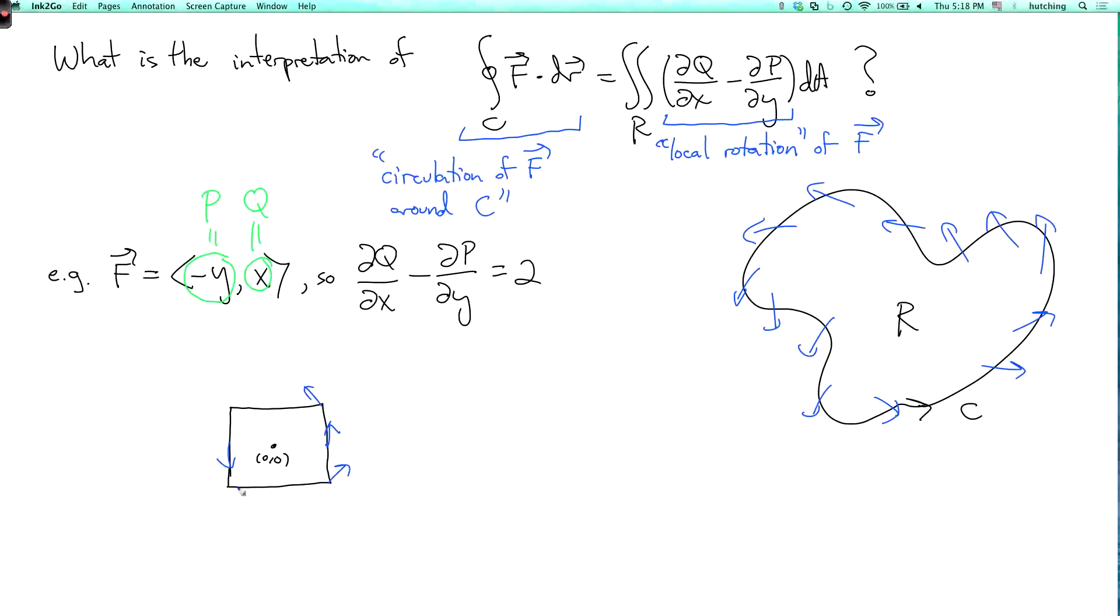On the left side of the square it's going downwards like this. On the top of the square it's going to the left because here the P, the first component of F, is -y. So when y is positive this is negative so it looks like this. The bottom is going to the right. So you can see it's sort of rotating in this little square.